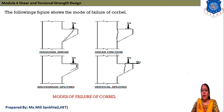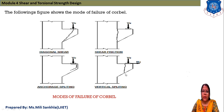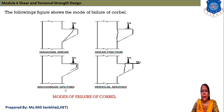In the second failure mode — shear friction — the shear force is applied and failure occurs parallel to it. Third is anchorage splitting: at the cantilever portion, shear force is applied and the hanging portion splits, forming anchorage splitting. Fourth is vertical splitting: shear force and normal reaction cause the hanging portion to split vertically. The four failure modes are diagonal shear, shear friction, anchorage splitting, and vertical splitting.